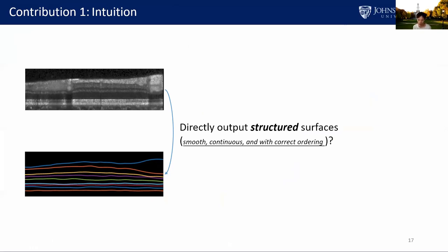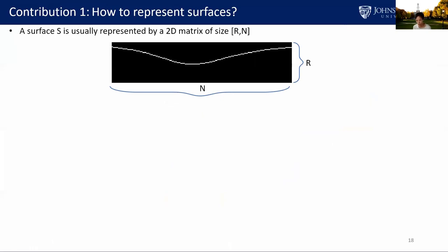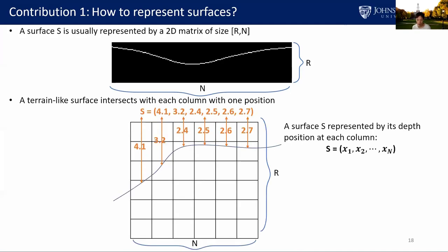We ask: is there a way to directly output structured surfaces which are smooth, continuous, and with correct ordering from an end-to-end deep network? First, we need to reformulate the representation of random surfaces. Instead of using a binary surface mask with the same size as the image, OCT layer surfaces are terrain-like surfaces which intersect with each column at one position. This unique characteristic lets us represent a surface S by its depth position at each column, which is a 1D vector. S can be represented by float values, so accuracy is not limited by pixel size.